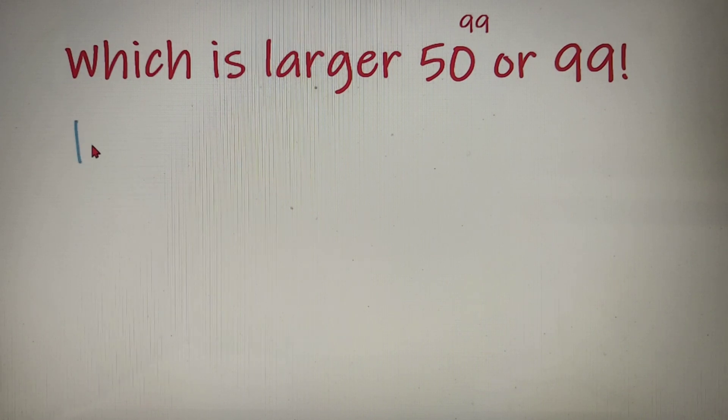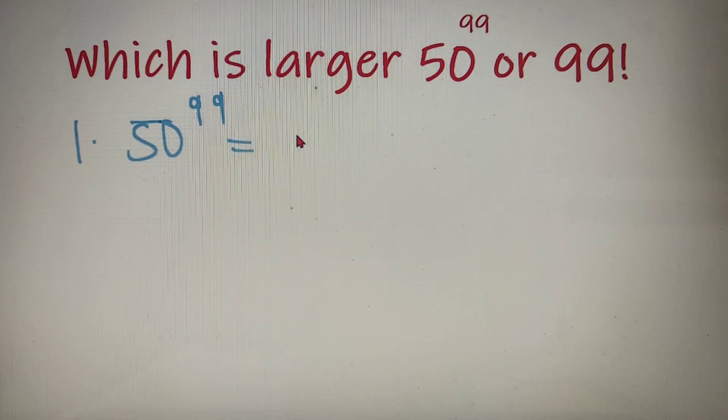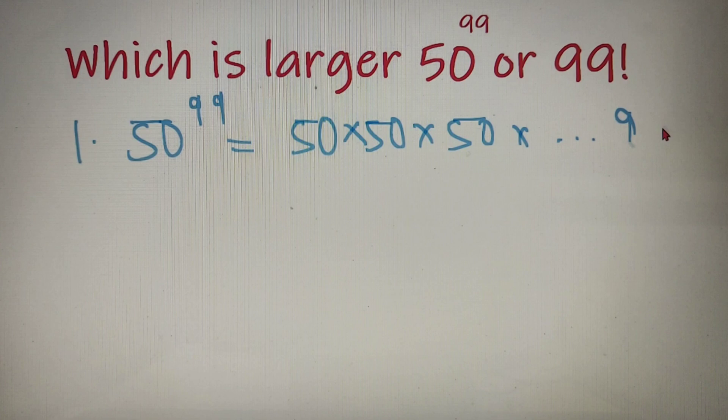Now the first number that is given to us is 50 to the power 99. Now 50 to the power 99 is nothing but the product of 50, 99 times. So we can say 50 to the power 99 is 50 into 50 into 50 all the way up to 99 times.